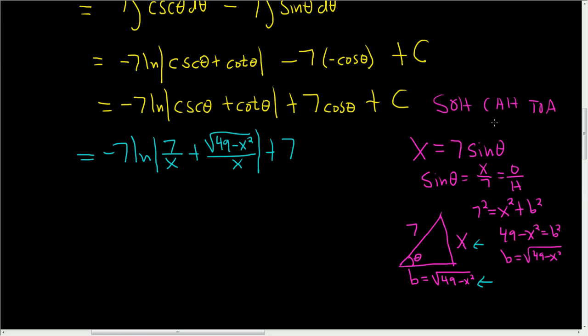And now we've got cosine. That's CA. So adjacent over hypotenuse. So the square root of 49 minus x squared. That's the adjacent. And the hypotenuse is 7 plus c.